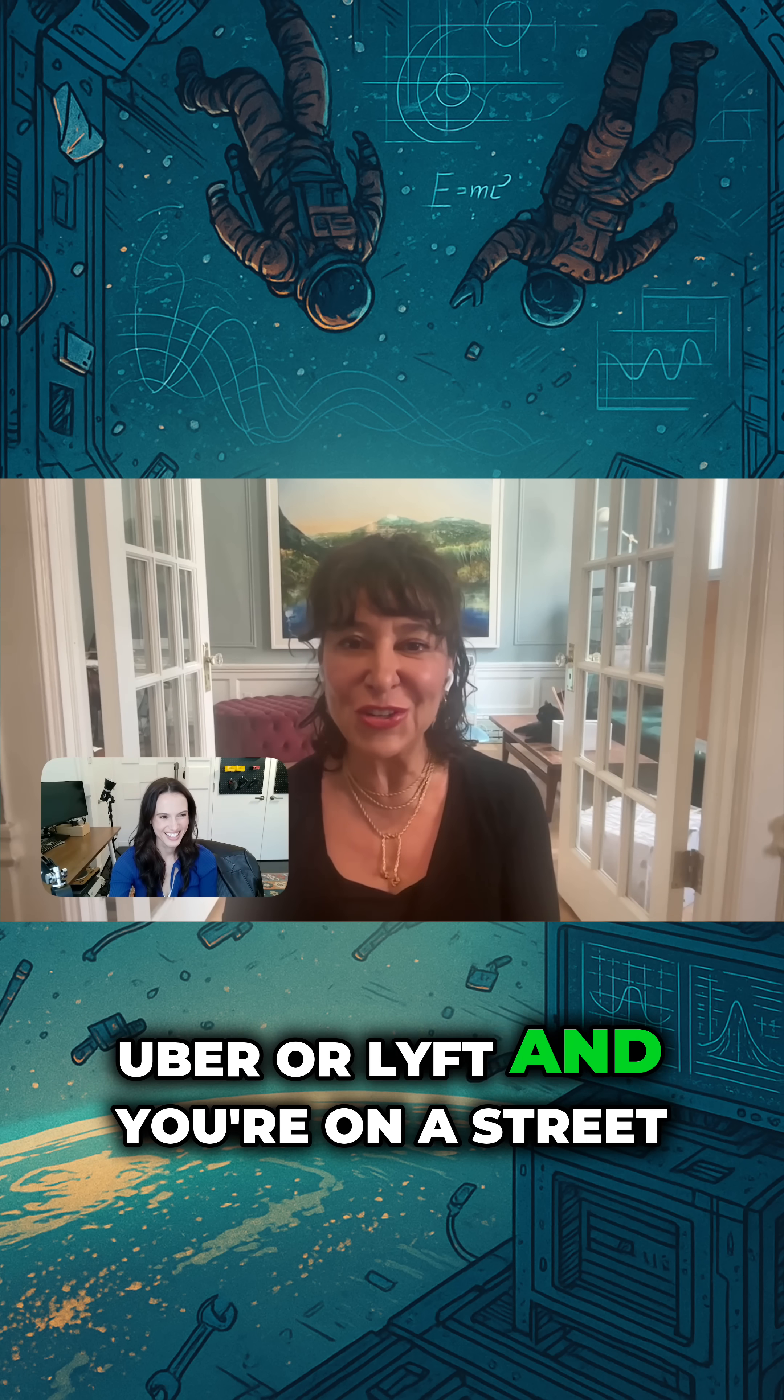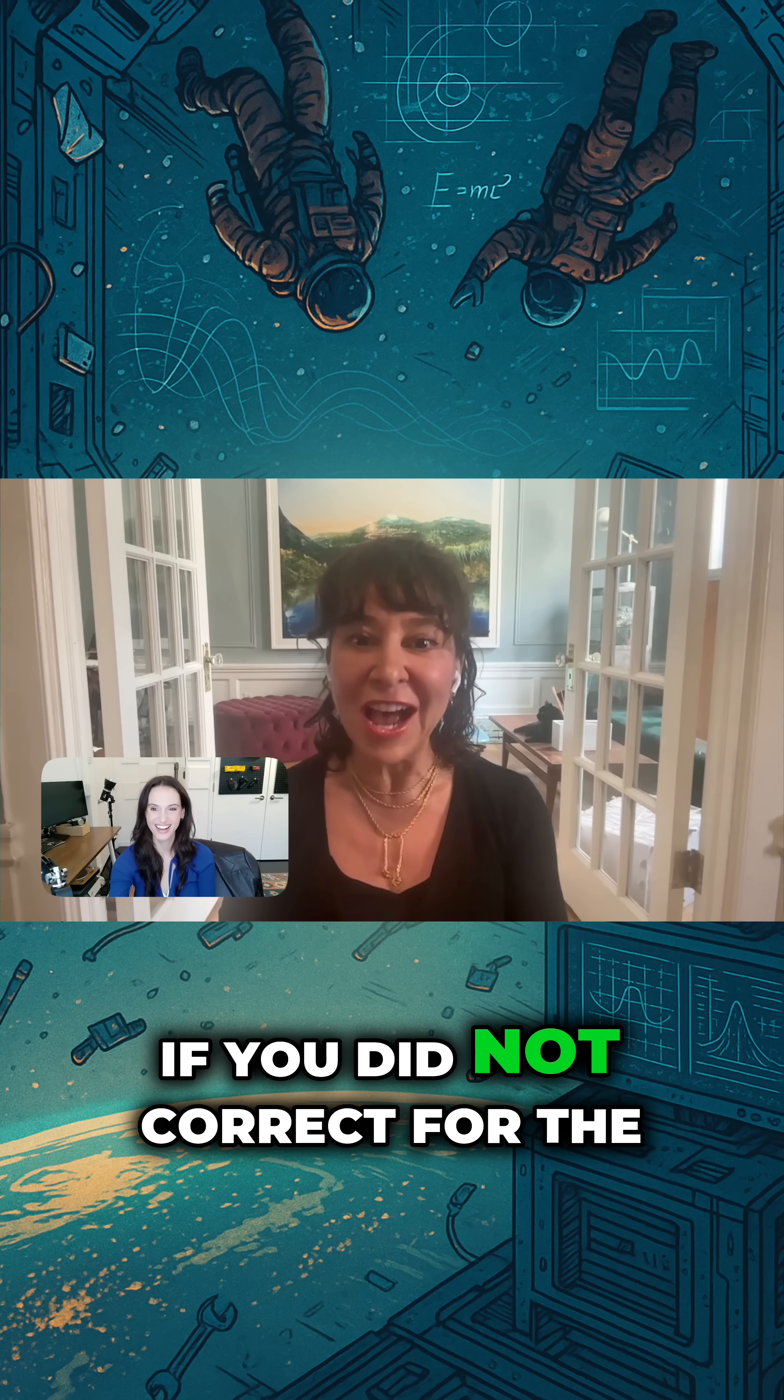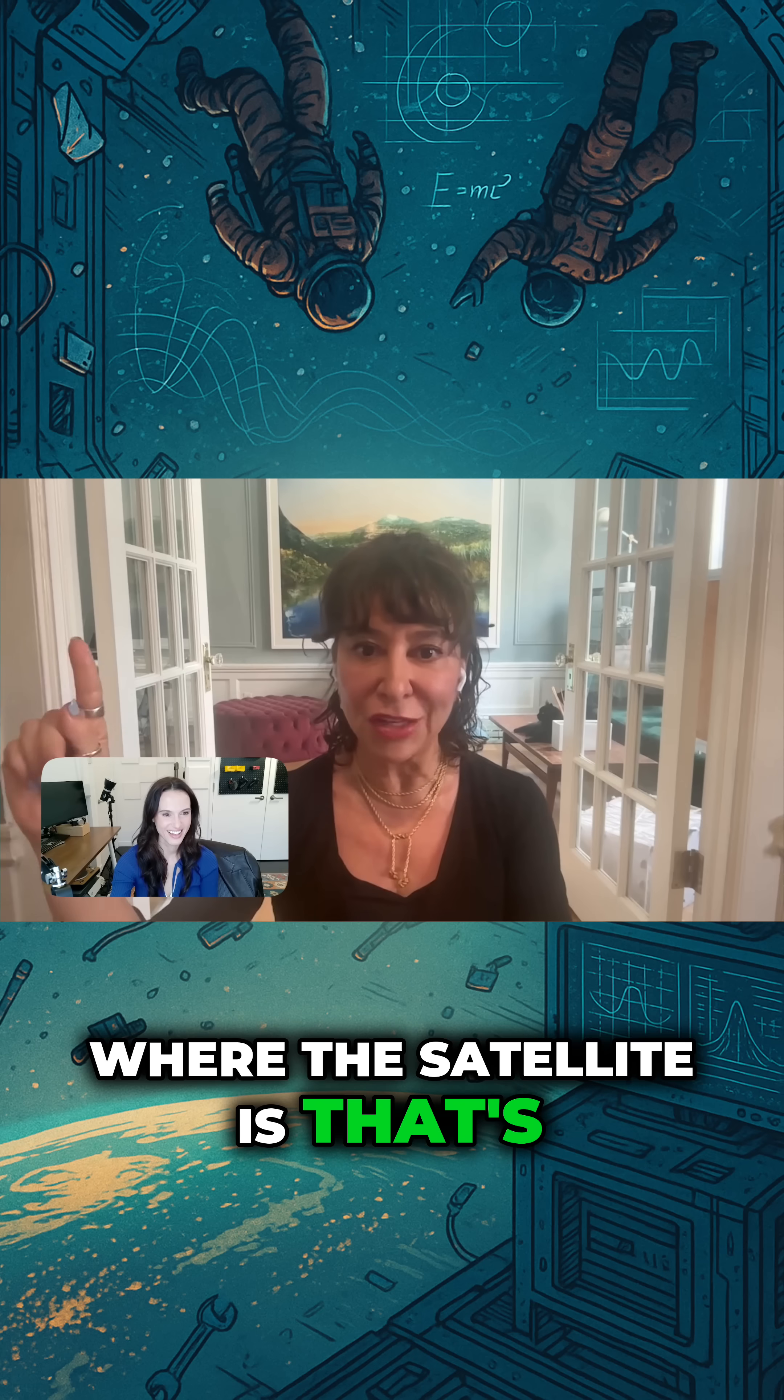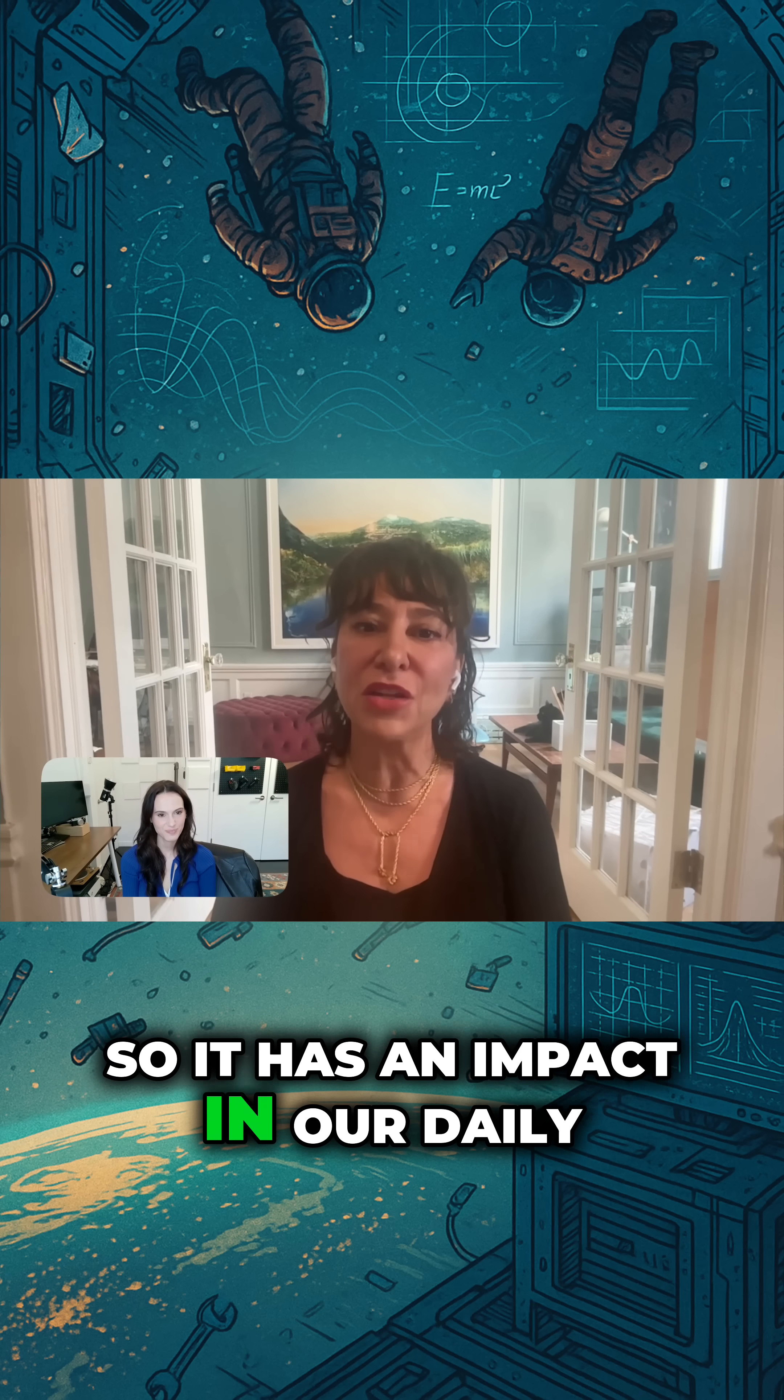If you're calling Uber or Lyft and you're on a street corner, you would be off by kilometers if you did not correct for the relativistic differences between where the satellite is that's receiving and sending the signals and your location down on the Earth. So it has an impact in our daily lives.